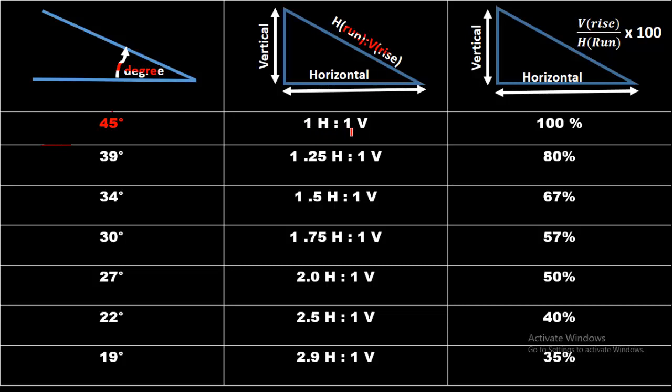1 vertical, it means that you have to travel 1 meter in the horizontal direction and 1 meter in the vertical direction to get a slope of 45 degrees. And this slope is expressed as 100%. Now, these slopes are interconvertible.